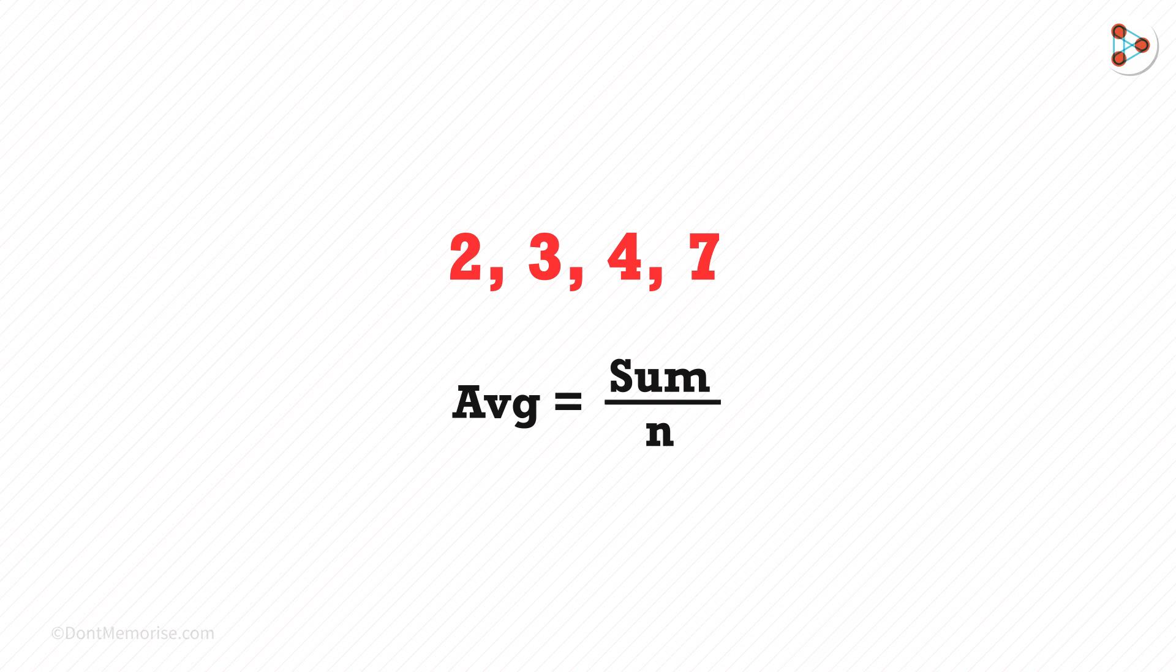The average is the sum of the numbers divided by the total number of numbers. The sum of these 4 is 16 and here there are 4 numbers. So 16 divided by 4 gives us 4.